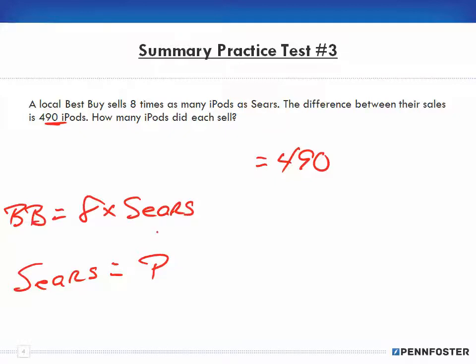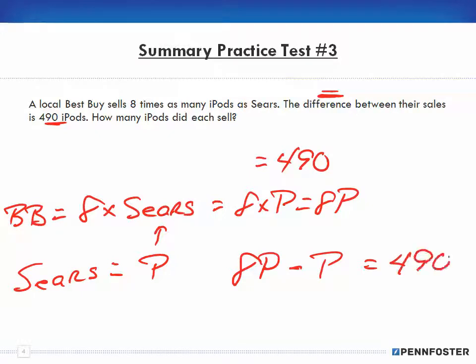So that means if we're going to set Sears as the unknown amount as variable P, well we just plug that into what Best Buy is, so that's eight times P or 8P. And since we're talking about the difference between their sales, that's a minus. So Best Buy is 8P and we subtract what Sears is - that makes sense, eight times P is greater than 1P - so 8P for Best Buy subtracting Sears would end up equaling the 490 sales for iPods. Now all we need to do is just the math: 8P minus 1P is 7P equals 490.